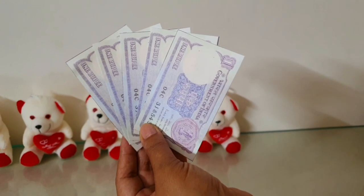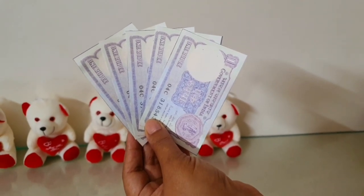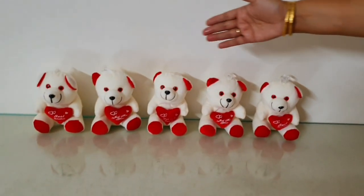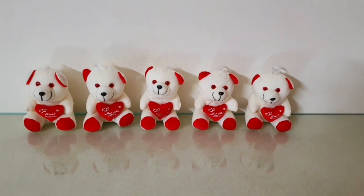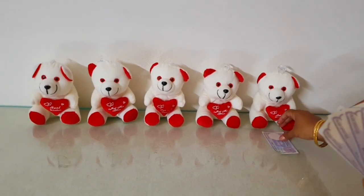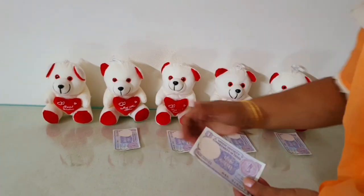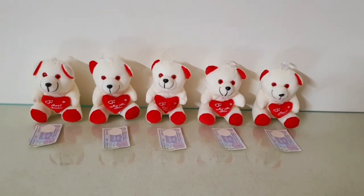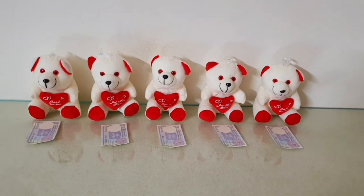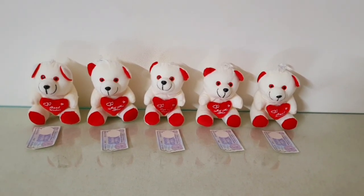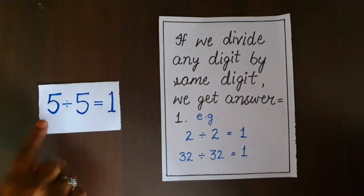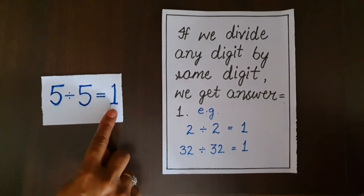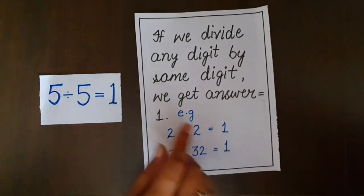I have five one-rupee notes and I want to distribute these five rupees equally among five teddies, or we can say five students. So I am giving them one each. I am left with none — five rupees has been equally divided among five students, and it's clear that each student got one rupee. So five divided by five, we get one.